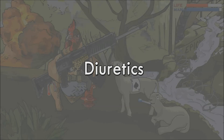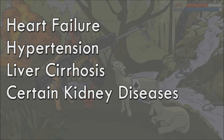Hey guys, welcome to another Visual Learner Studios video. Today we will be learning the main classes of diuretics and the specific drugs within each class. A diuretic is any substance that induces the production of urine from the body. In medicine, diuretics are used to treat a wide variety of conditions including heart failure, hypertension, liver cirrhosis, and certain kidney diseases.